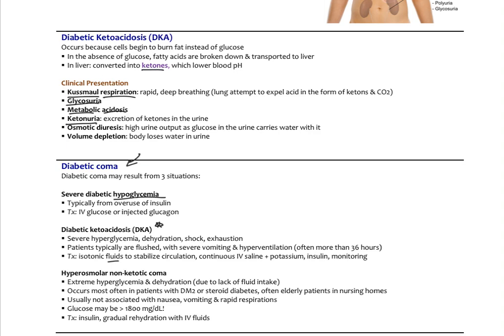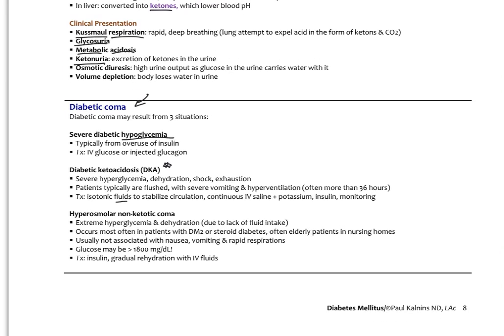There's a third type of diabetic coma called hyperosmolar non-ketotic coma. This occurs in patients with extreme hyperglycemia and extreme dehydration, usually due to lack of fluid intake. It's most typical in type 2 diabetes or steroid-induced diabetes — commonly elderly patients in nursing homes. This one is not associated with overt nausea, vomiting, or rapid respirations like DKA. Glucose levels could be over 1,800 mg/dL. The glucose in the blood osmotically pulls fluid out of cells, literally dehydrating them, especially in the brain. Treatment is insulin to stabilize blood sugar, gradual rehydration, and IV fluids.